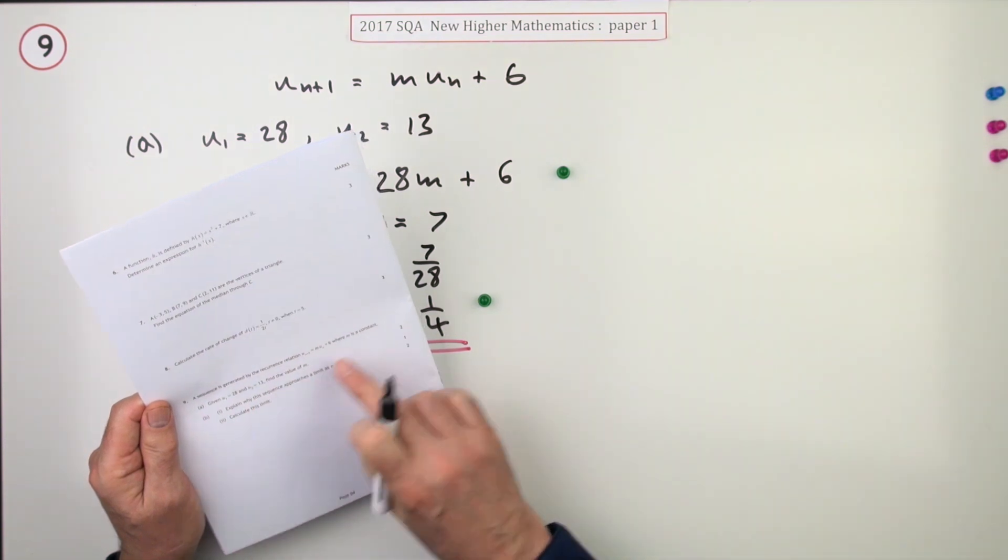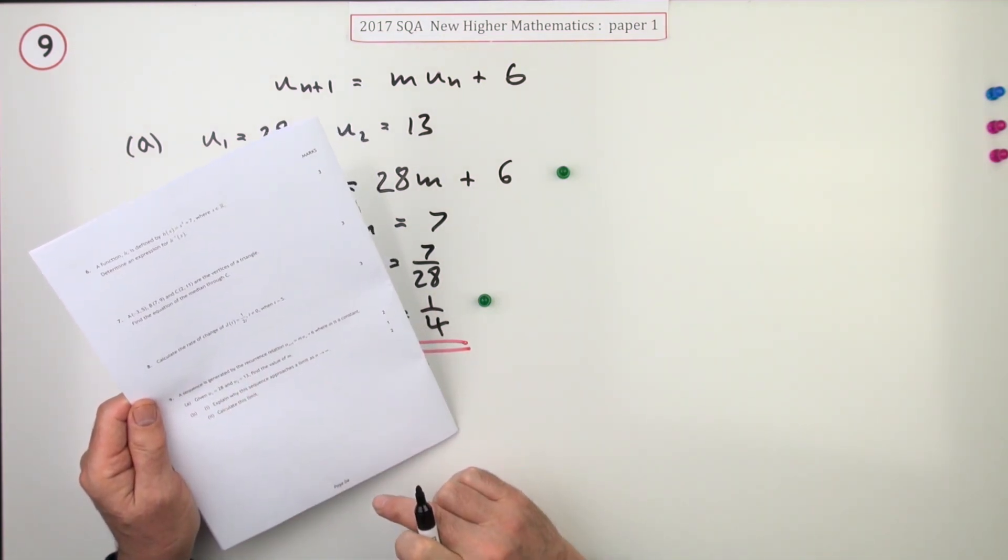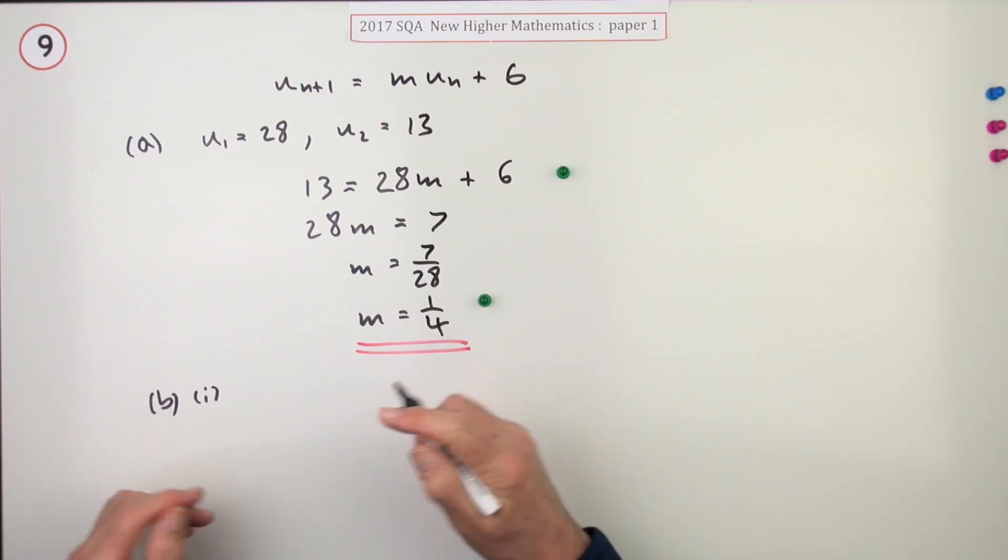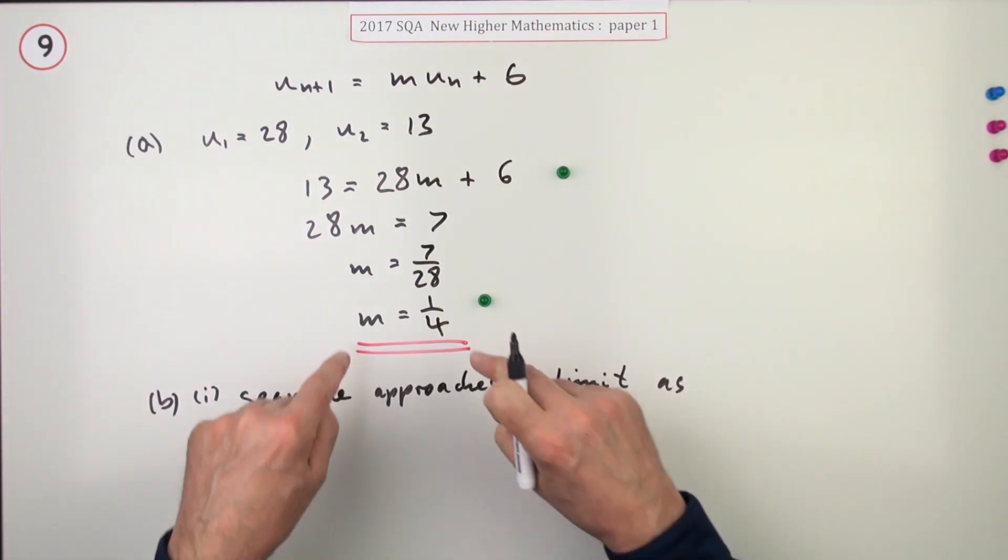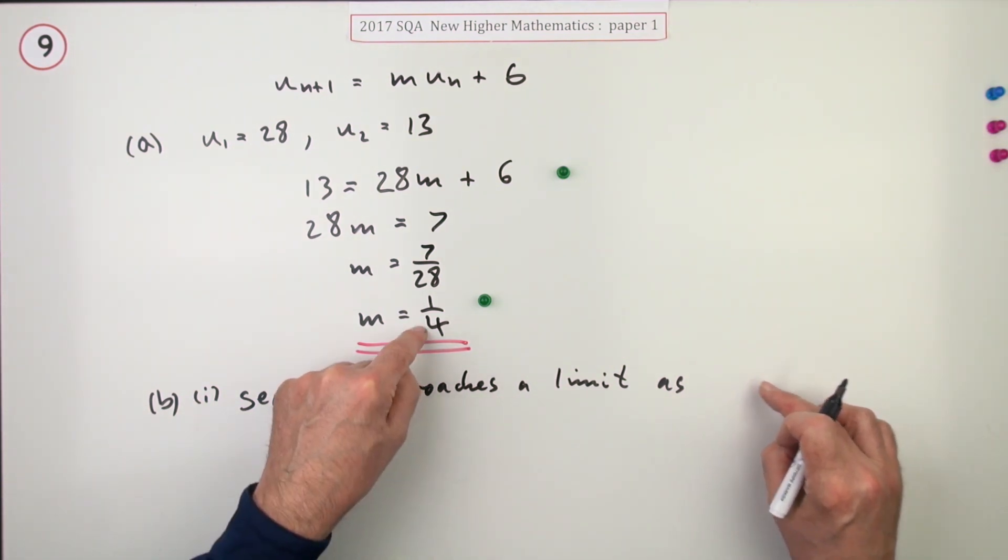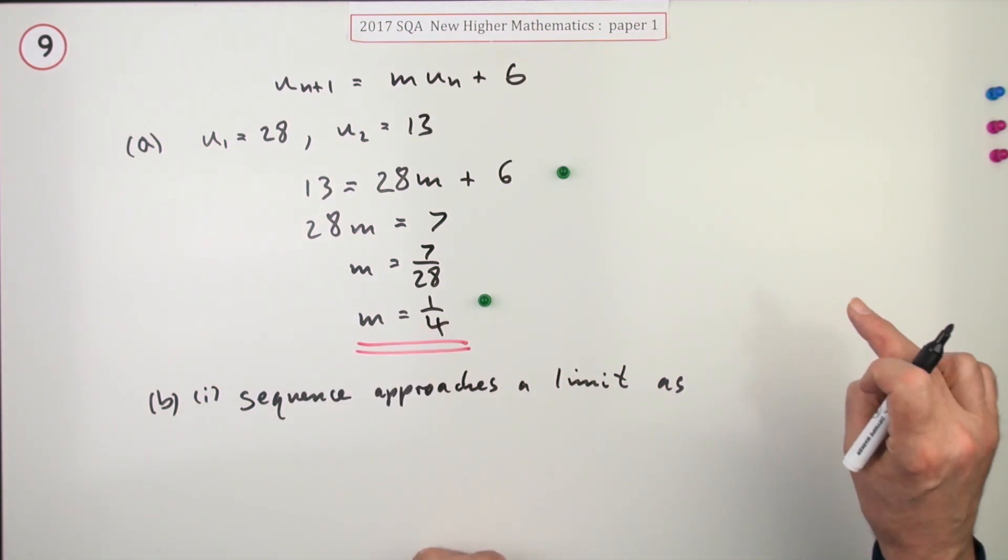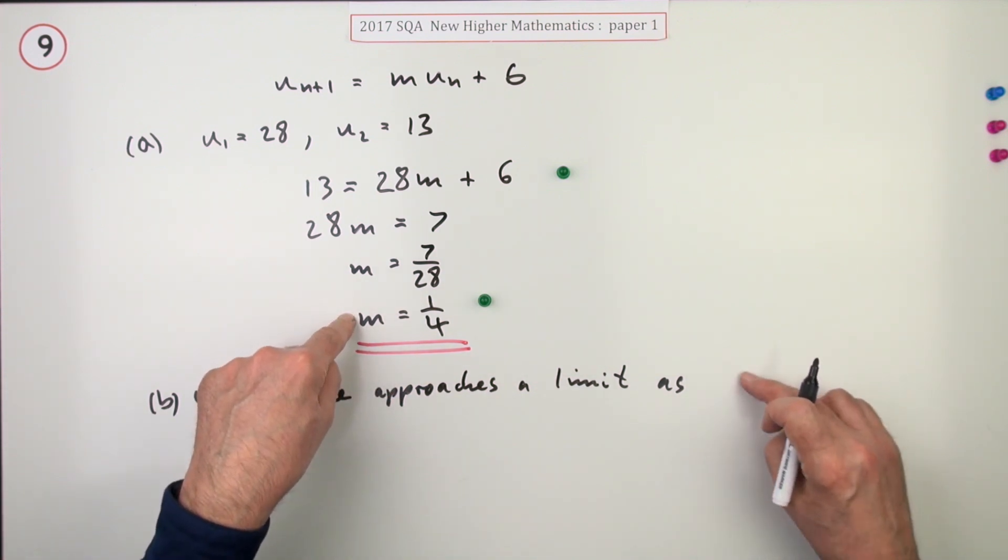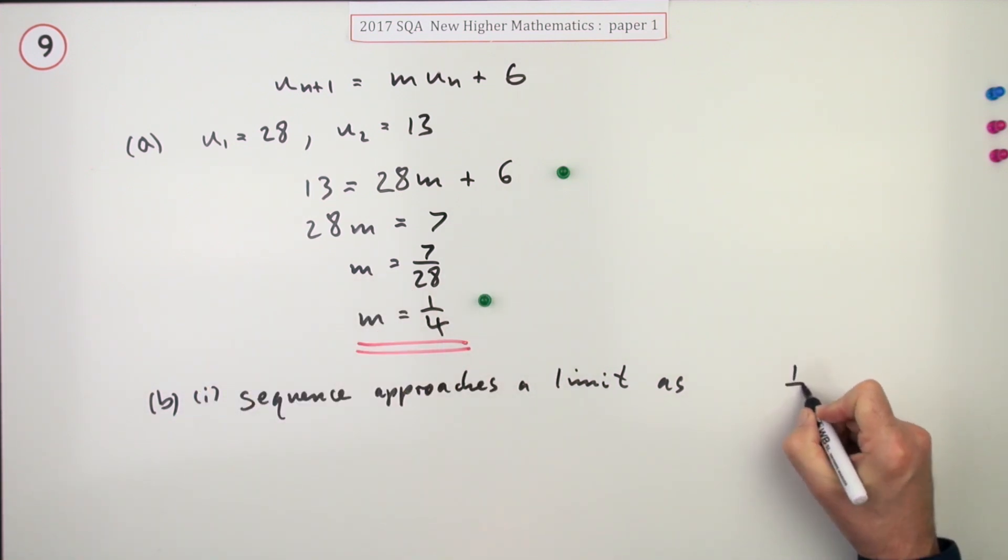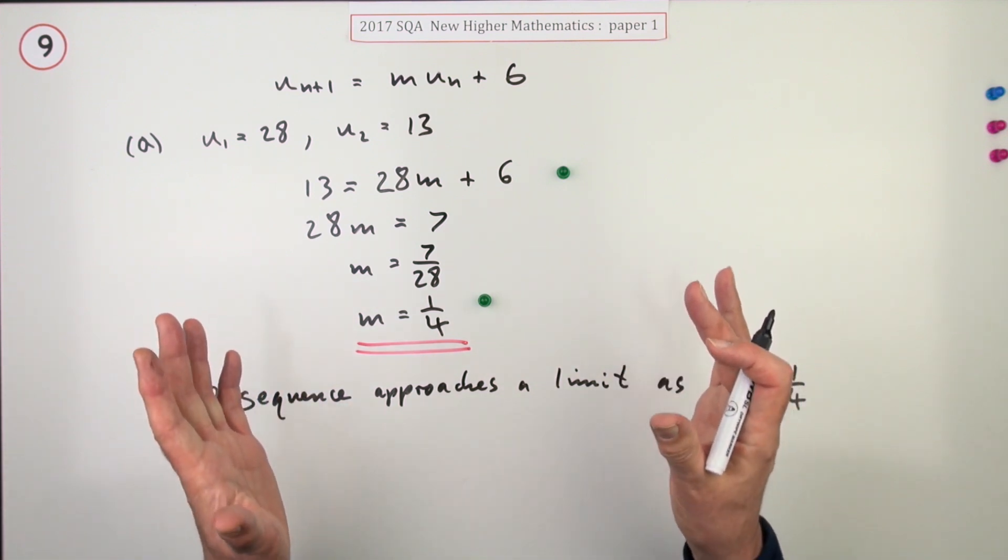Now part b, first part. There's that standard one mark: explain why this sequence approaches a limit as n tends to infinity. Normally that's a standard you'd put down the wording. The sequence approaches a limit and the reason is this multiplying number is a proper fraction. So you could write that as a quarter is a proper fraction. What you're meant to do is use the letter a. You shouldn't even really write m, but since m's been defined, you could state m because it's previously been defined in this question as the value of a quarter. But normally you go in with a quarter. As a quarter is a proper fraction, which is a perfectly valid statement because that's the actual reasoning behind it.